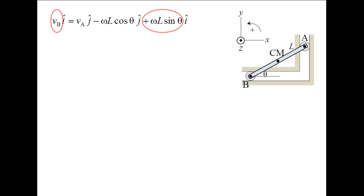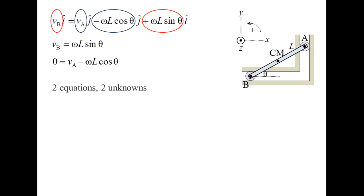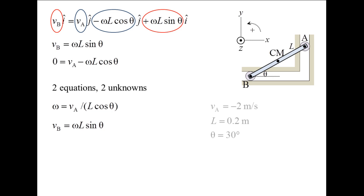Plug in the expressions for the velocities and take the cross product. Equating the x-terms and the y-terms, we obtain two equations. We now have two equations and two unknowns, and can solve for the angular velocity of the link and the velocity of point B. Plugging in the values of the known quantities, the link is rotating in the clockwise direction at 11.55 radians per second. Point B is moving to the left at a speed of 1.155 meters per second.